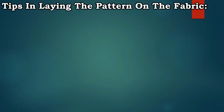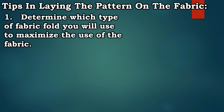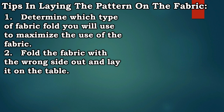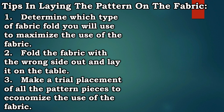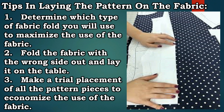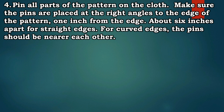Tips in laying the pattern on the fabric: 1. Determine which type of fabric fold you will use to maximize the use of the fabric. 2. Fold the fabric with the wrong side out and lay it on the table. 3. Make a trial placement of all the pattern pieces to economize the use of the fabric. 4. Pin all parts of the pattern on the cloth. Make sure the pins are placed at right angles to the edge of the pattern, one inch from the edge, about six inches apart for straight edges.